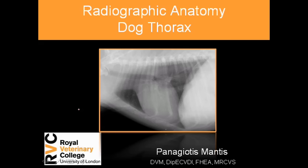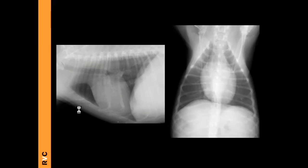Hello and welcome to this short session on the normal radiographic anatomy of the canine thorax. My name is Pete Mantis, and in the next few minutes we will go through how the various organs in the thorax appear normal, and how we can use some rules of thumb to make us more confident in our decision whether they are bigger, smaller, normal, or abnormal.